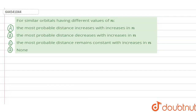Hello students, today our question is: for similar orbitals having different values of n, which option is correct? First option: the most probable distance increases with increase in n. Second option: the most probable distance decreases with increase in n. Third option: the most probable distance remains constant with increase in n. And the last option is none.